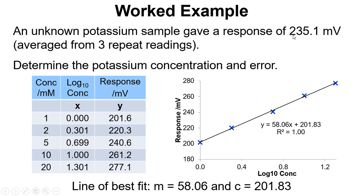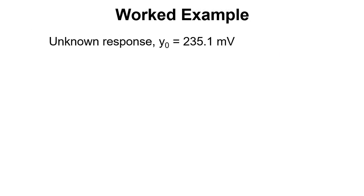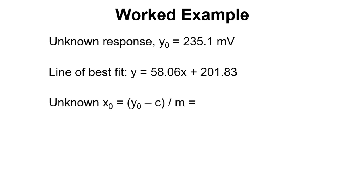The response for the unknown sample is given here, 235.1 millivolts, and so we can use this and work through an example. We've got the unknown response which we refer to as Y0, we've got the line of best fit from the calibration graph so we can work out the unknown X0 by rearranging the line of best fit, plugging in the numbers and we get 0.5731.